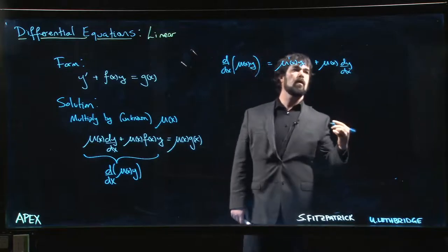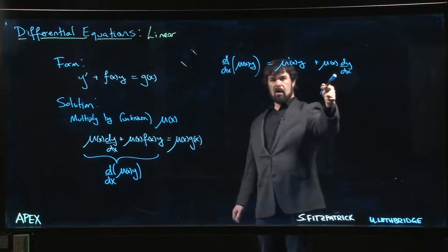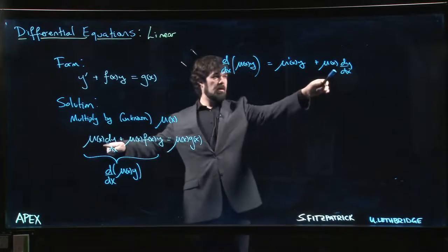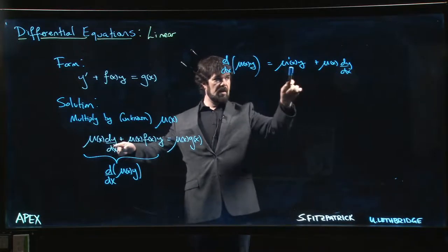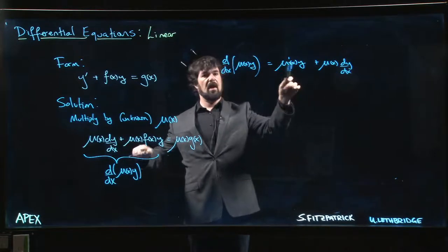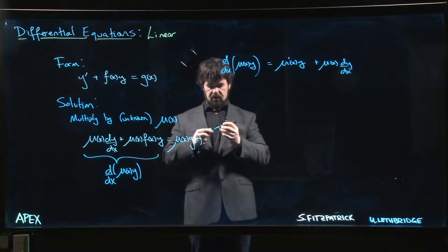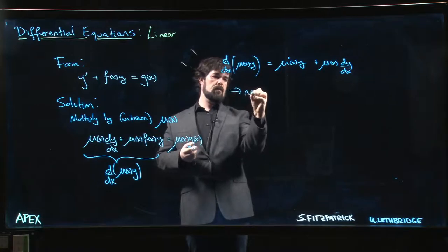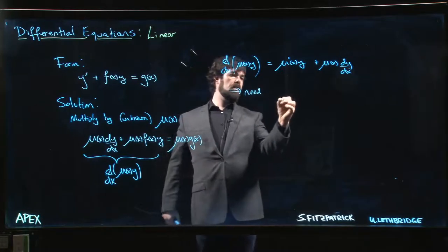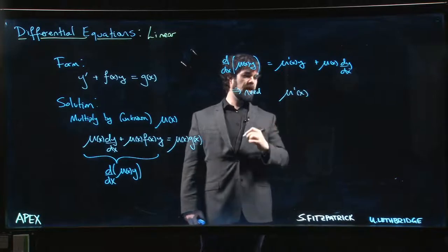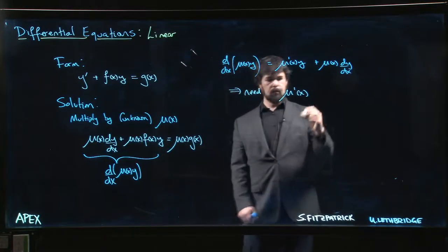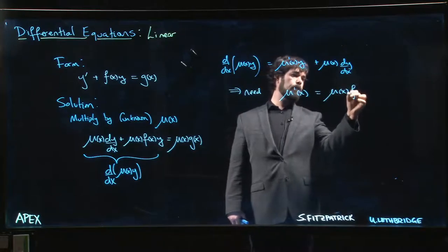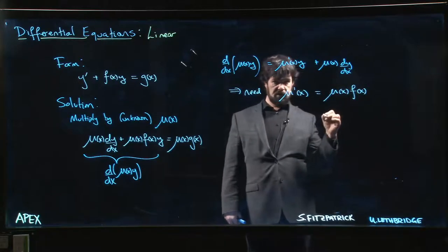And now we kind of compare what we have here to what we have there and we say, well look, these match. All right, so we need this to match with that. So that means what we need is we need mu prime of x to be equal to mu of x f of x.